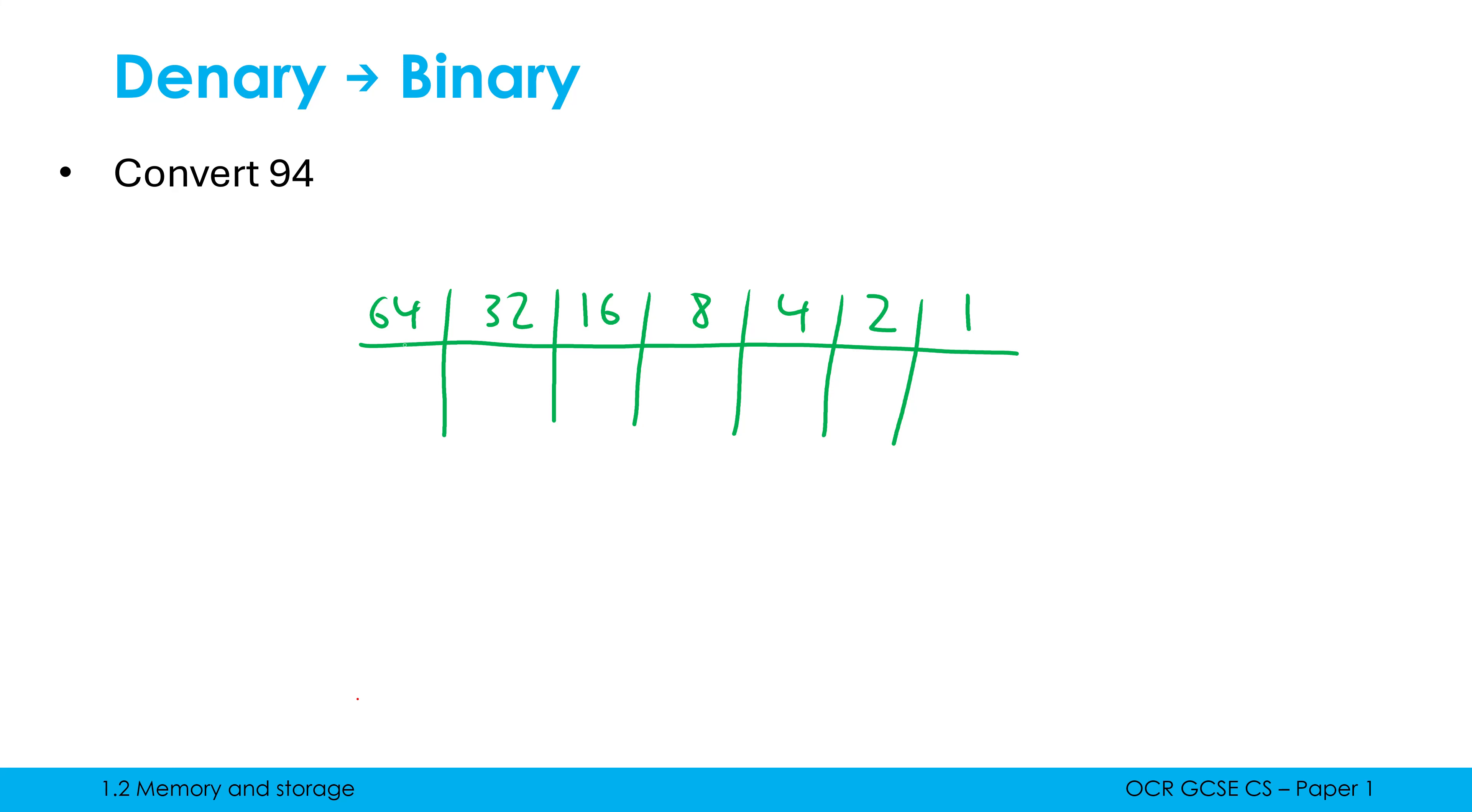So what am I doing? I'm going how many times does 64 go into 94? It goes in one time with a remainder of 30. How many times does 32 go into 30? It doesn't, so I write down a 0 and I leave my remainder as it is. How many times does 16 go into 30? It goes in one time with a remainder of 14.